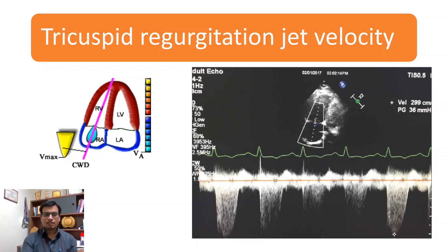Measurement of TR jet velocity is needed when measurement of peak E and A velocity is not sufficient to categorize the diastolic function. Continuous wave Doppler is placed across the tricuspid valve along the main axis of the TR jet to measure the TRV max. If TRV max is more than 2.8 meters per second, that is abnormal.